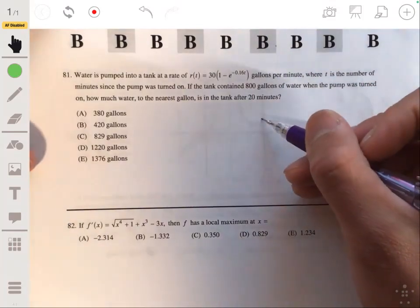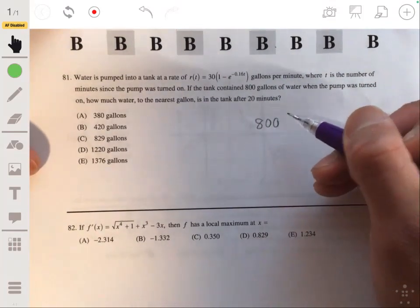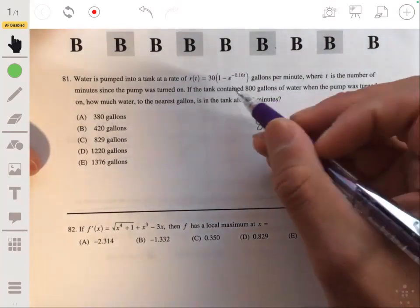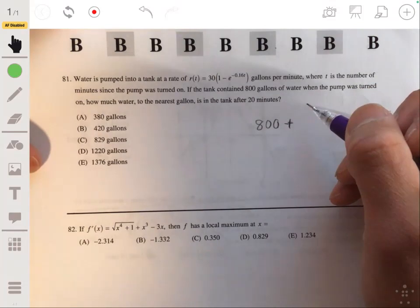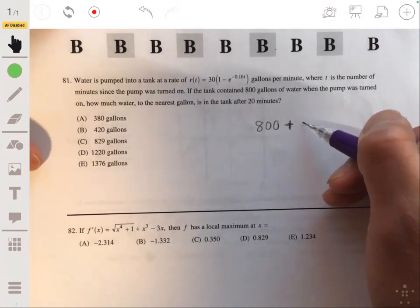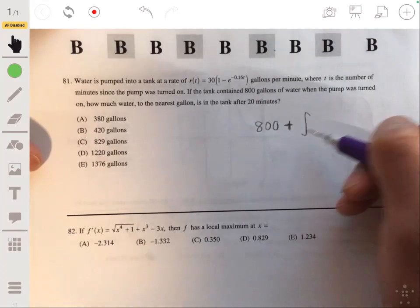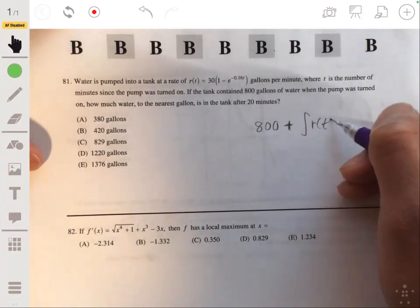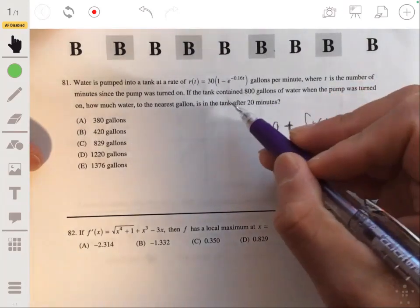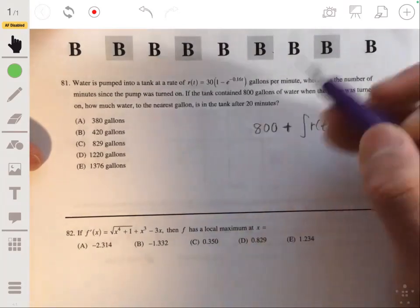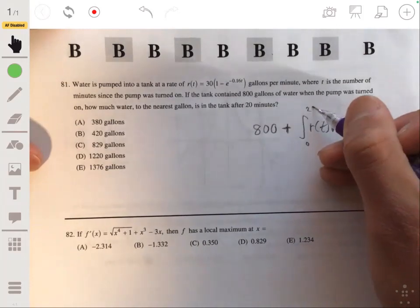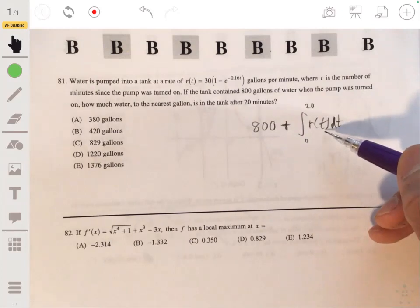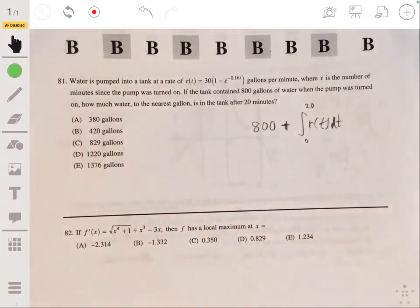So what we can do is set up an integral. So it starts at 800. So the amount of gallons in a tank would be 800 plus the integral of the rate from 0 to 20, because we're going all the way to 20. So we just have to integrate this. So we can just use technology.